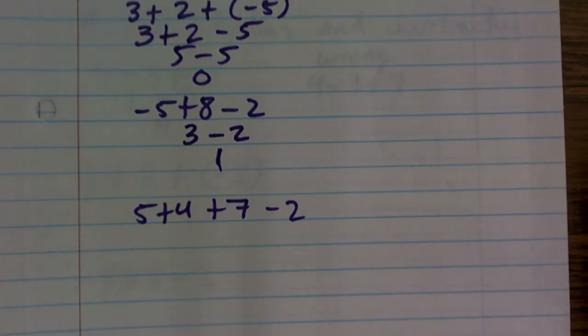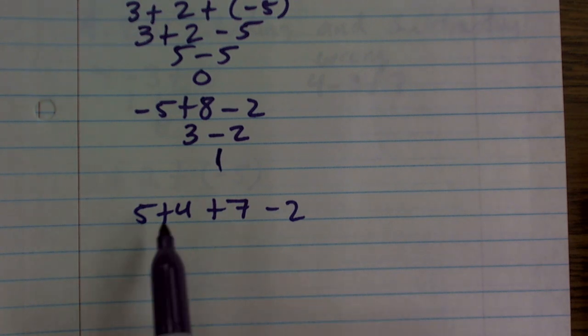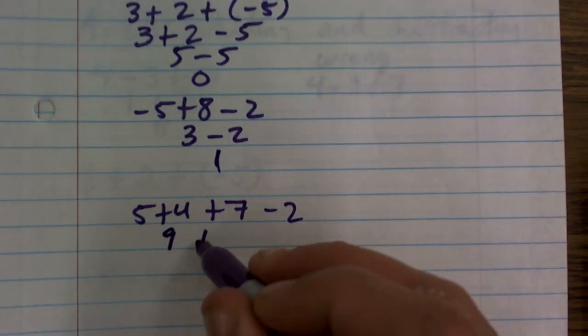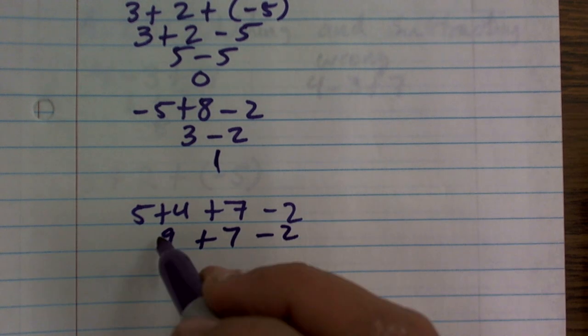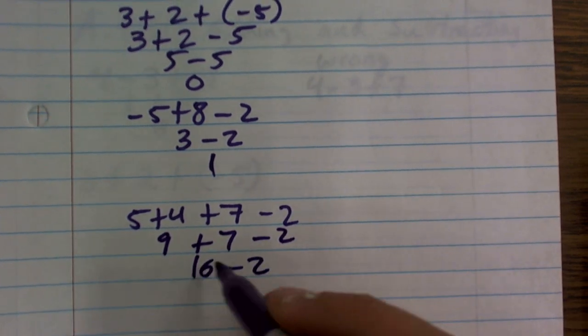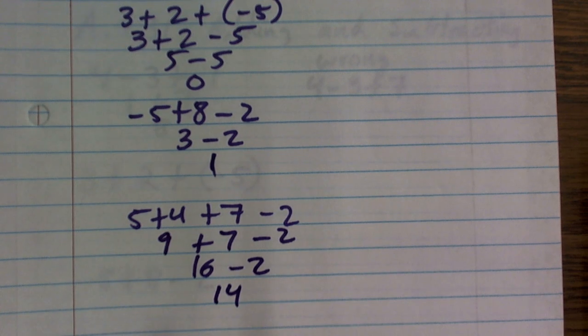And the last problem - again, I'm just going to work from left to right, so it's not that bad. Just make sure you're careful because a lot of students get anxious with this. 5 plus 4 is 9 plus 7 minus 2. 9 plus 7 is 16 minus 2. 16 minus 2 is 14.